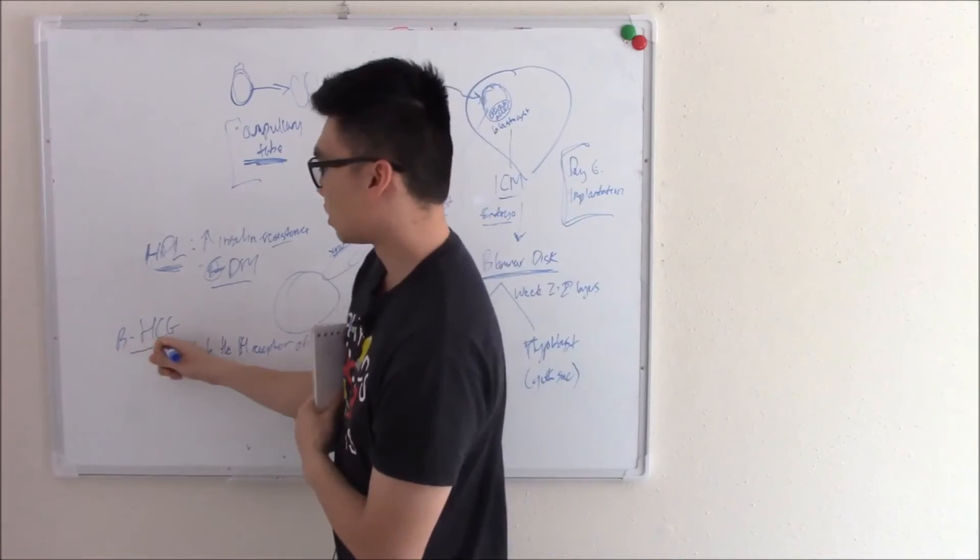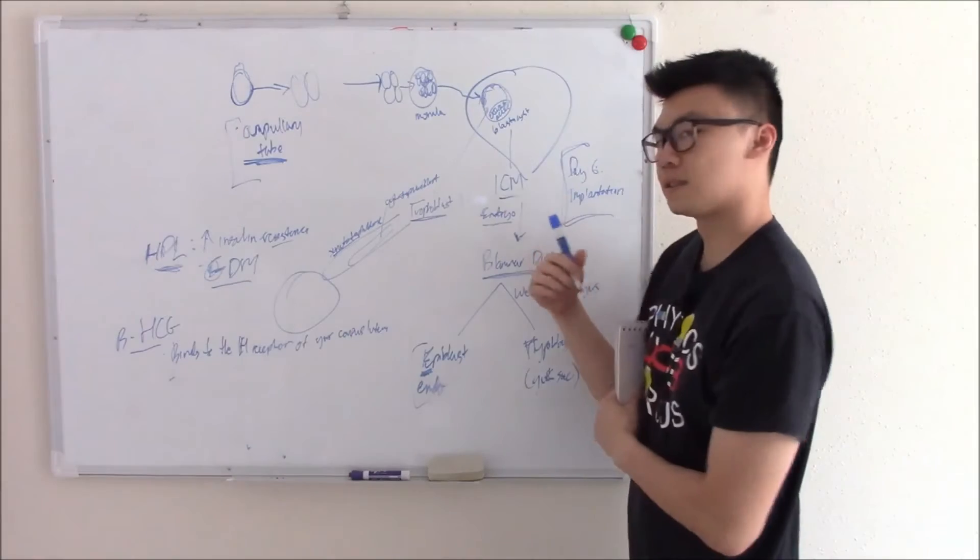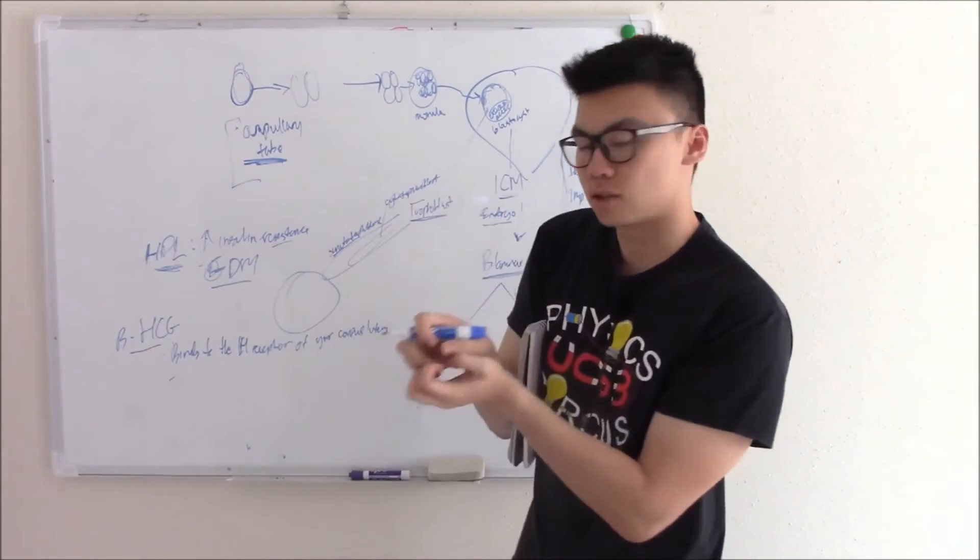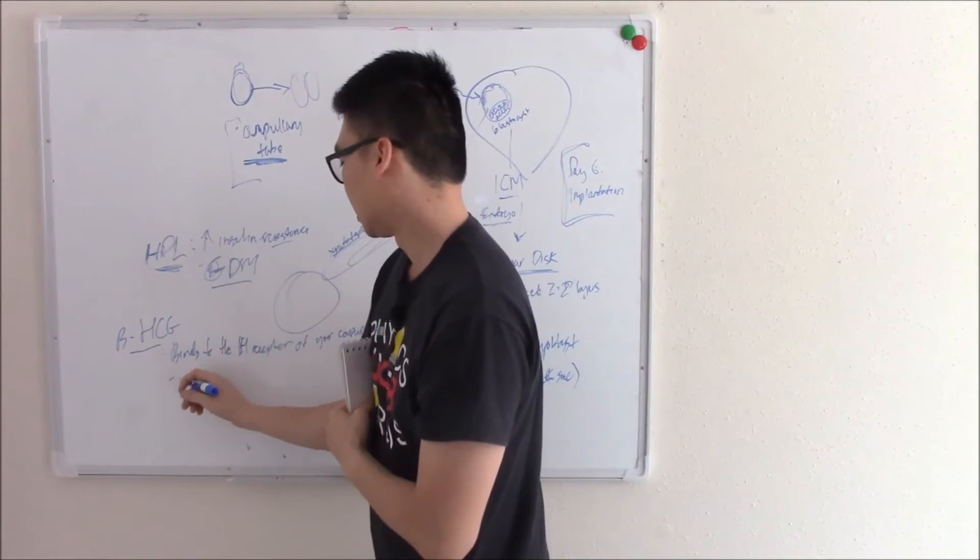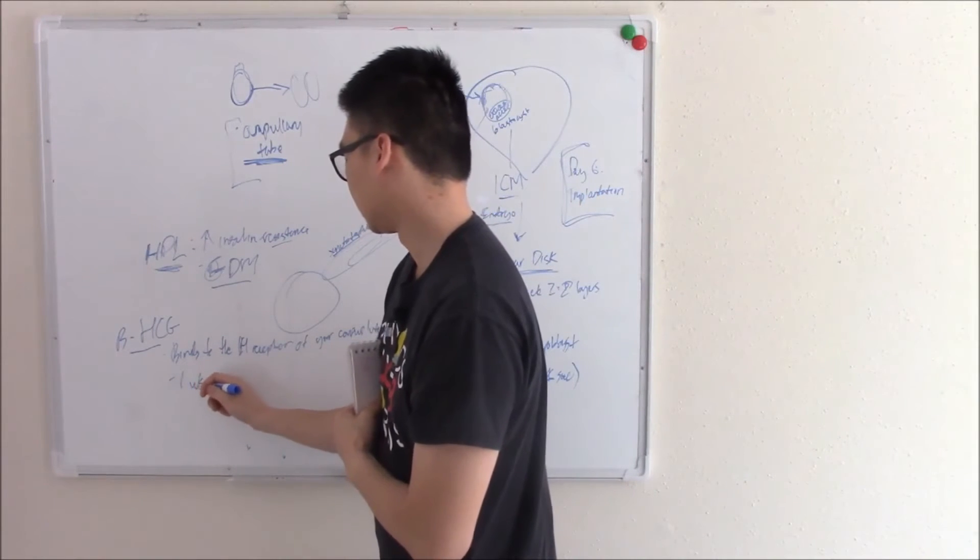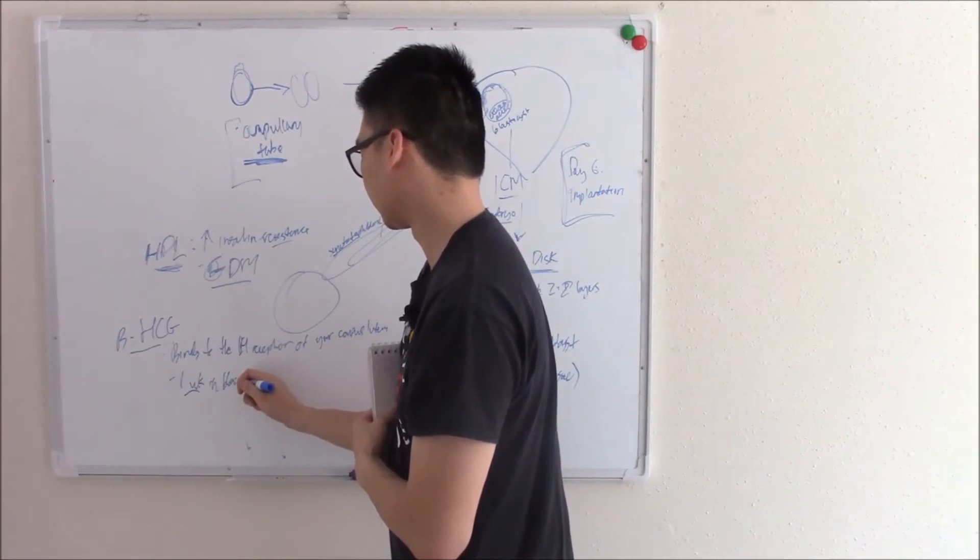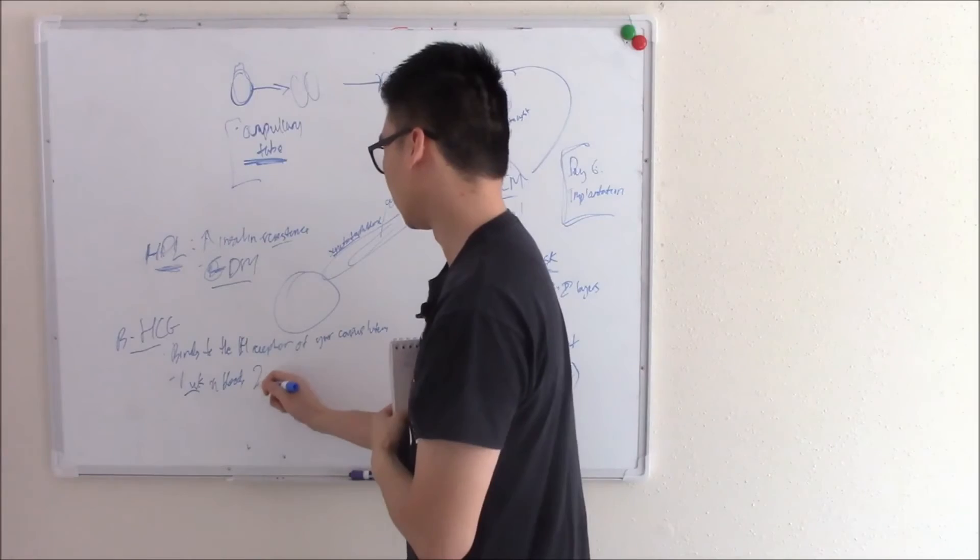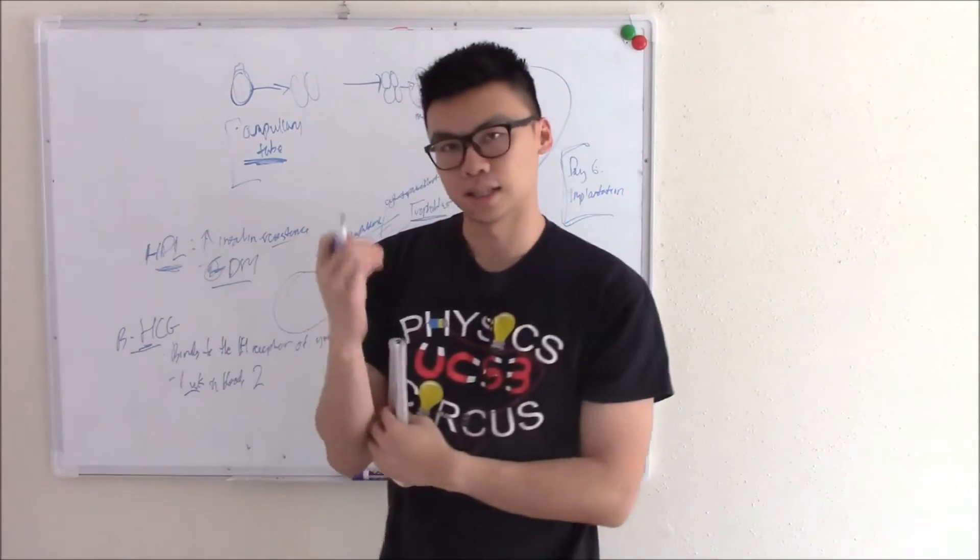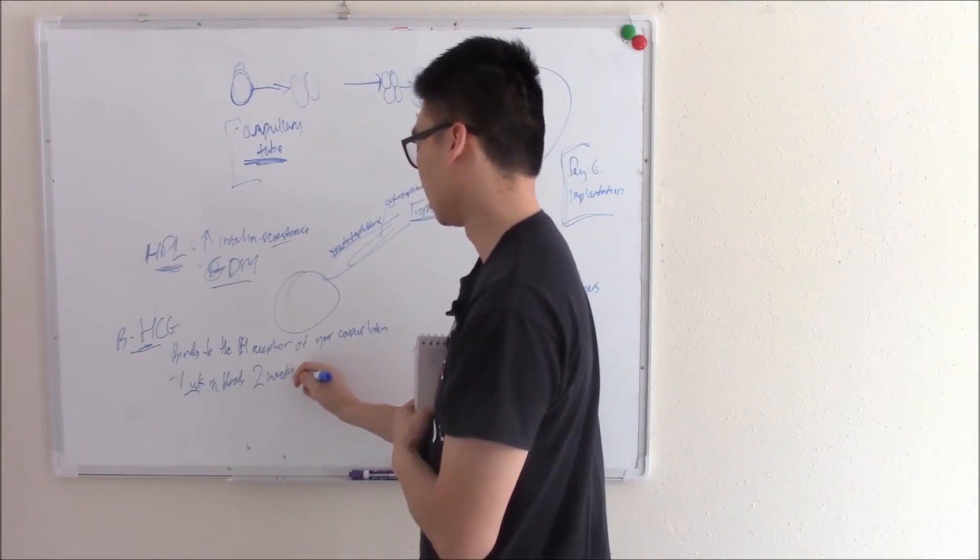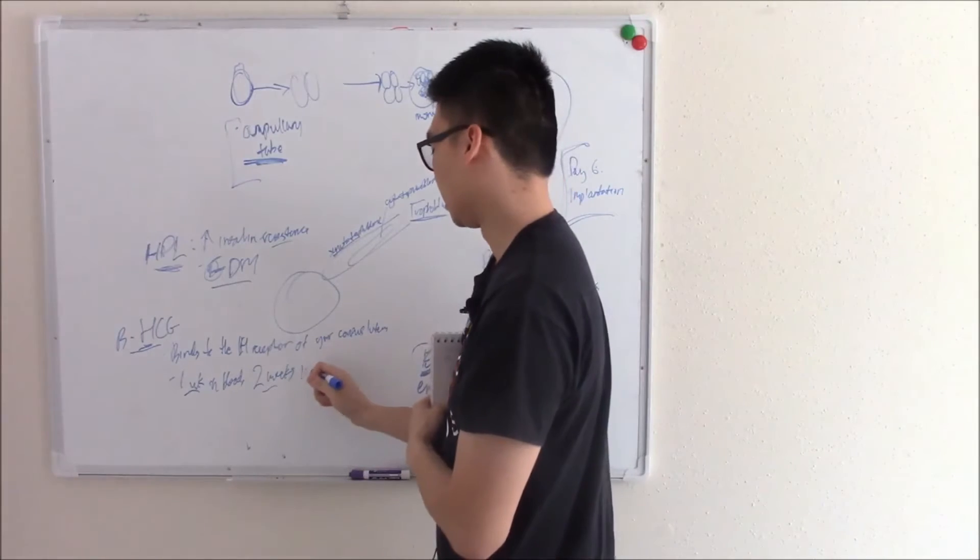This is the hormone that we measure in pregnancy tests. We said the blastocyst implants on day six. As soon as it implants, it starts to make these villi, make these hormones, and we can measure it one week, or after day six, we can measure it in the blood. Or if you want to do a urine test to measure this, it's a little less sensitive, so it takes about two weeks before we can measure beta-HCG in the urine.